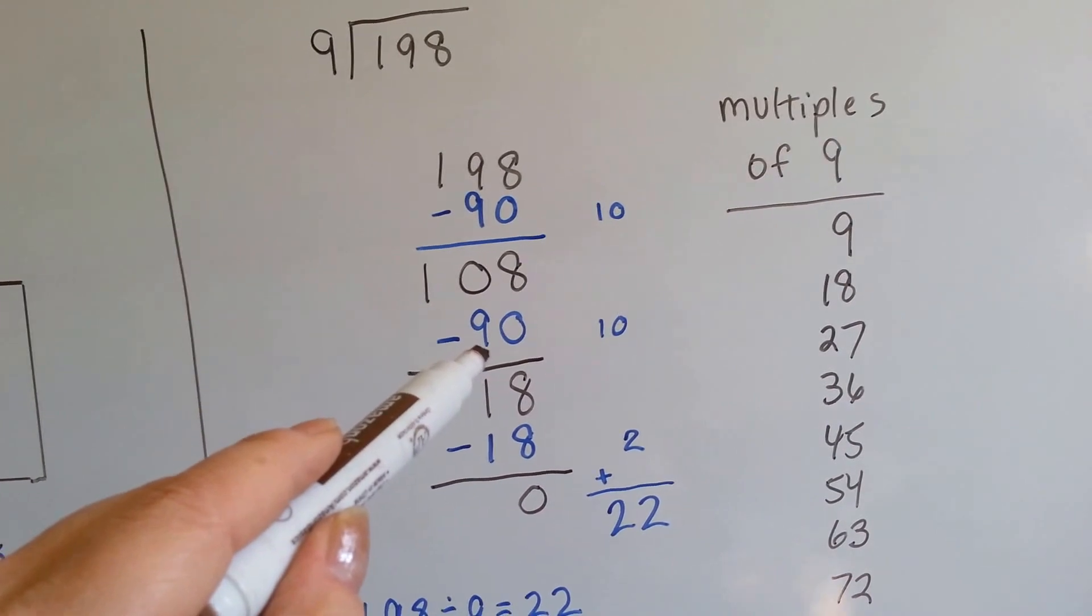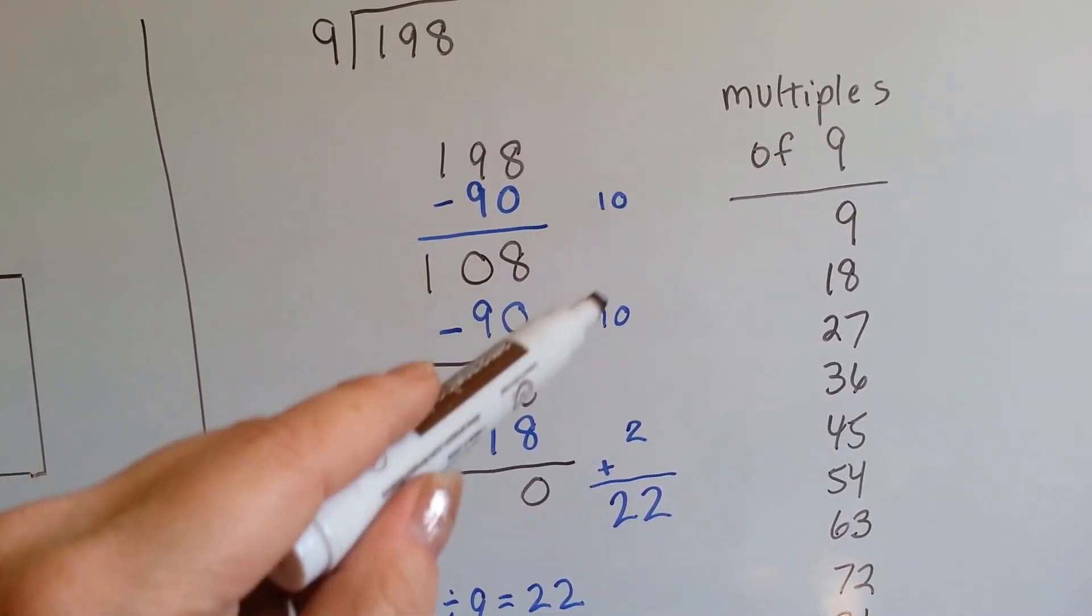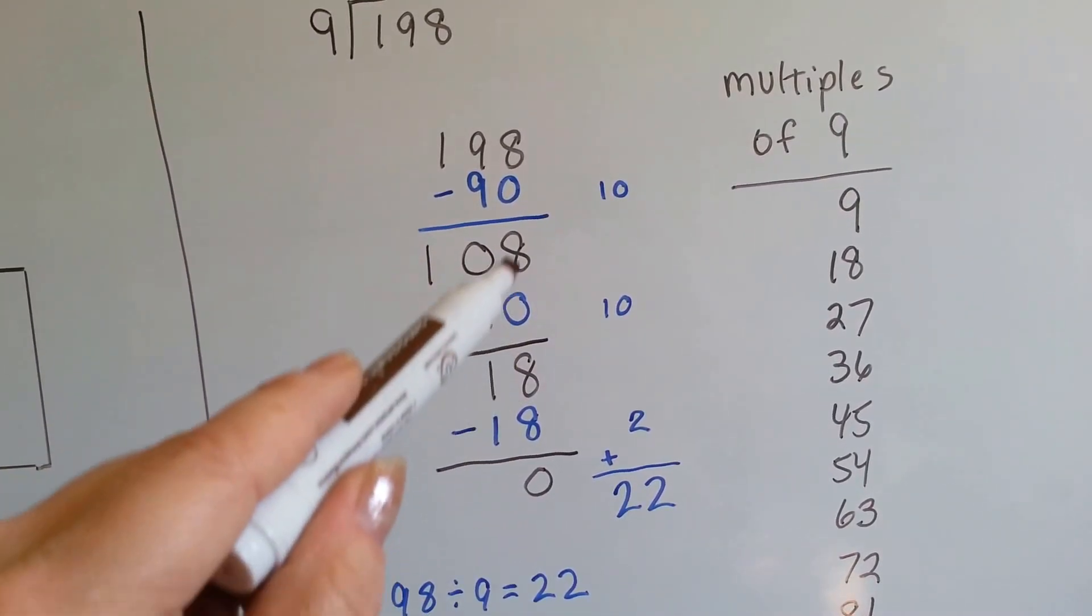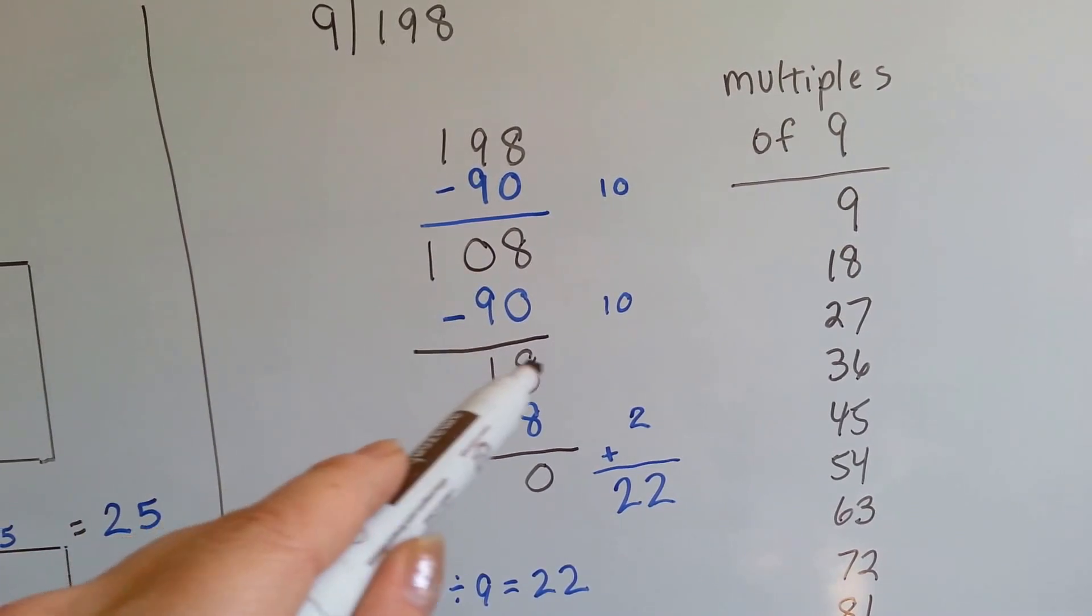We can take away another 90, can't we? From 108. So, that's another 10. That leaves us an 8 here and a 1 in the tens column. That's 18.